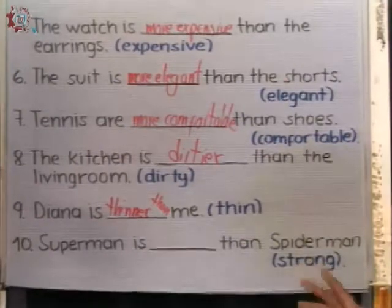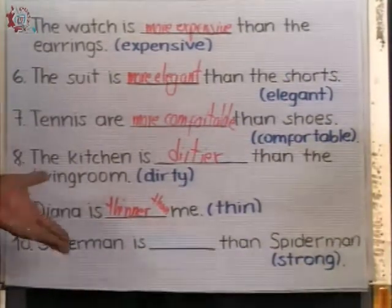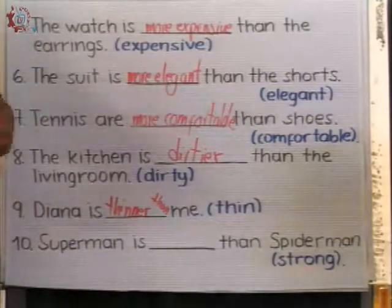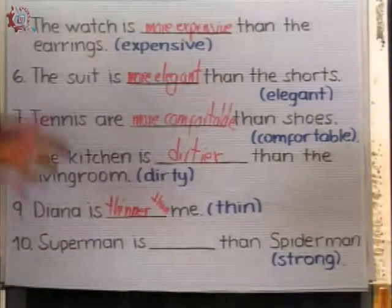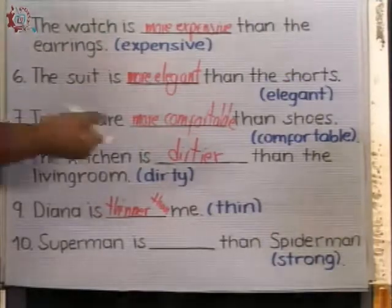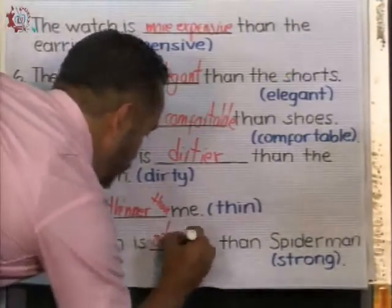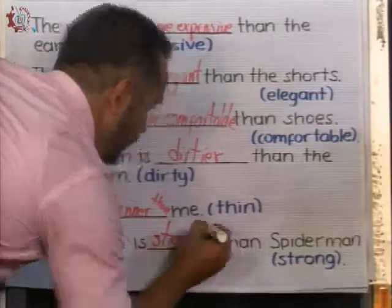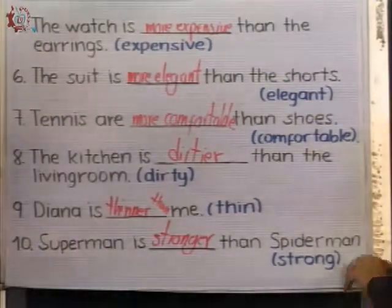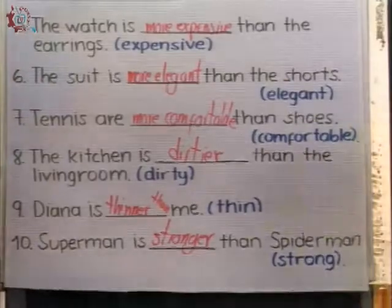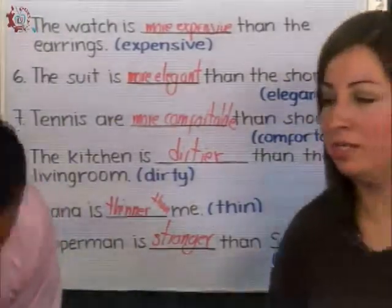And the last exercise: Superman is ___ than Spiderman — adjective: strong. Strong — just one sound, it's short. He is stronger than Spiderman. That's good.